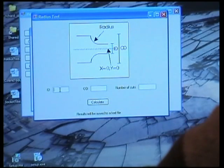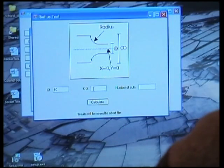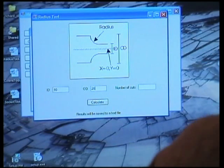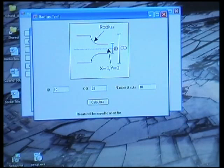Inside diameter. I've just put an inside diameter of 10mm, outside of 28mm, and we're going to do it in 18 cuts. That'll give us a fairly coarse finish. Let's just do that calculation for now.